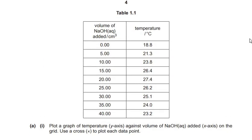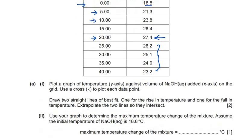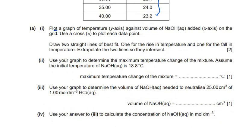The data table shows the volume of NaOH and the temperature noted. Without NaOH the temperature is 18.8°C. Then every time 5 cm³ of NaOH is added the temperature is measured. At 20 cm³ of NaOH the maximum temperature of 27.4°C is reached, after which the temperature starts decreasing on further additions of NaOH. The sub-question asks us to plot a graph of temperature against volume of NaOH added.